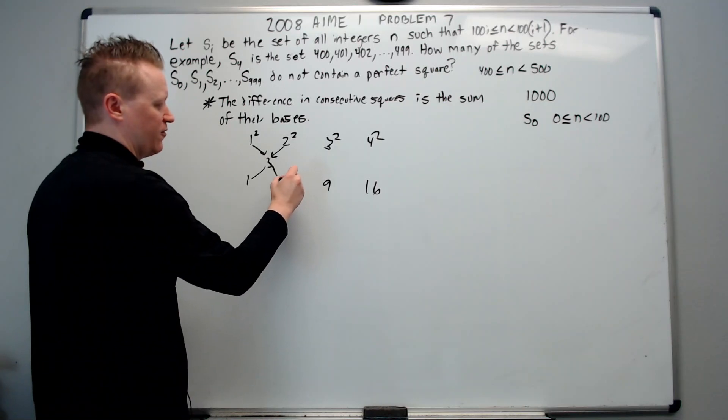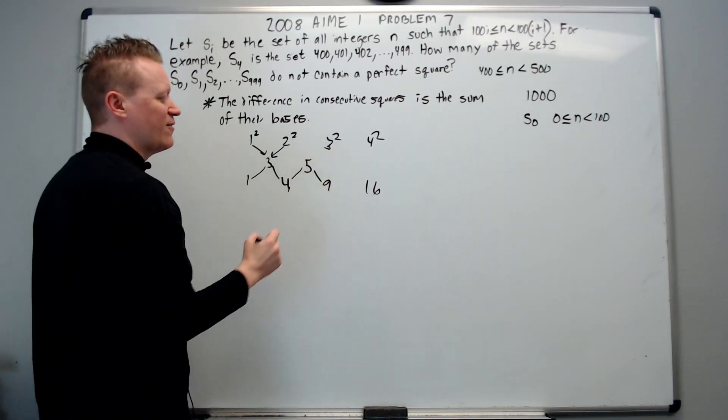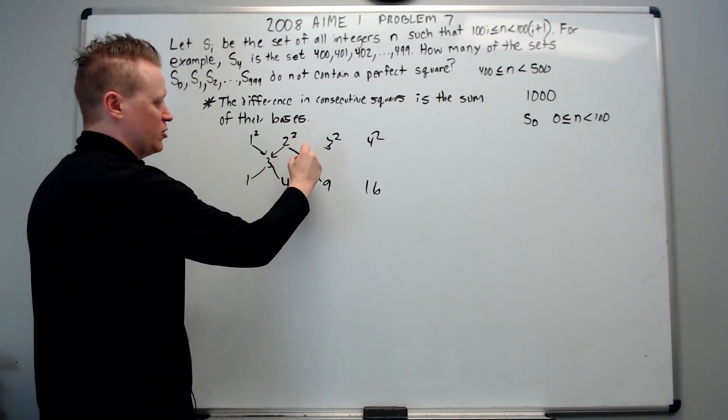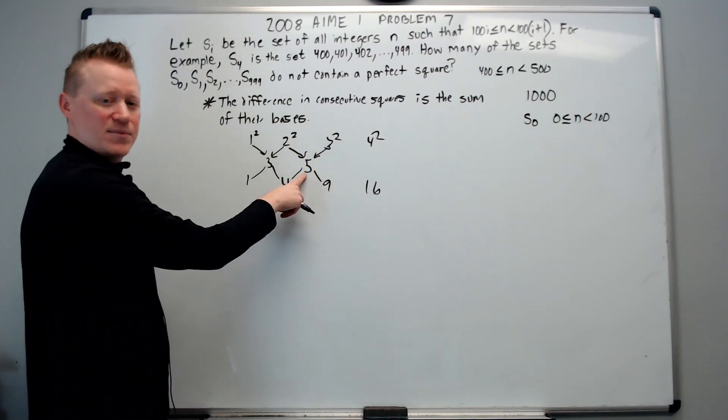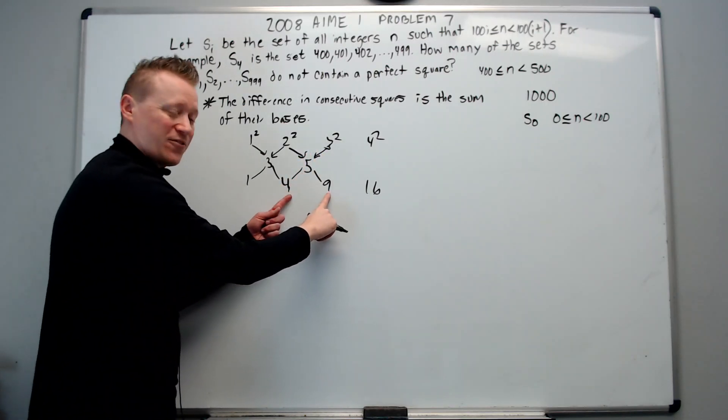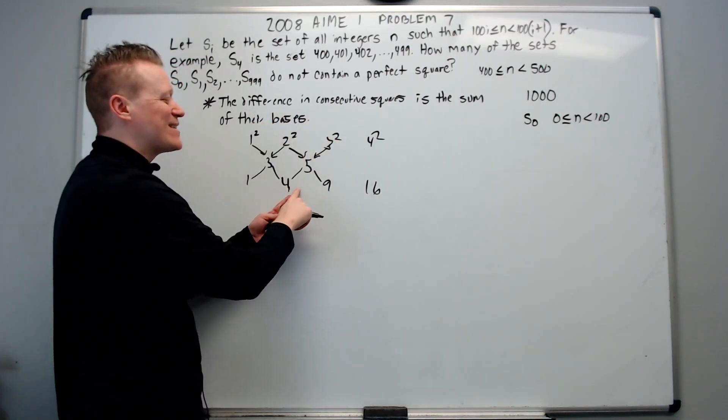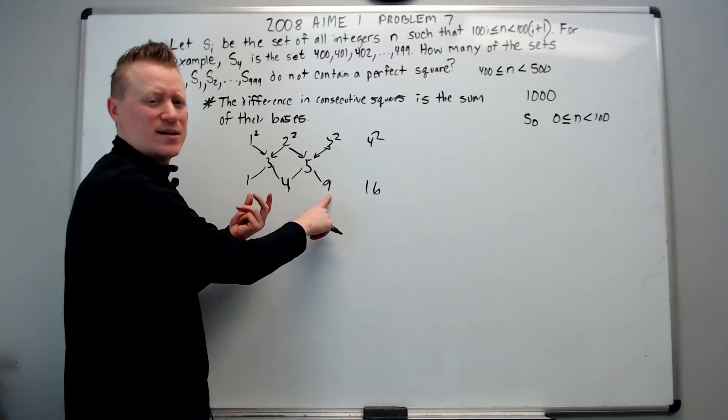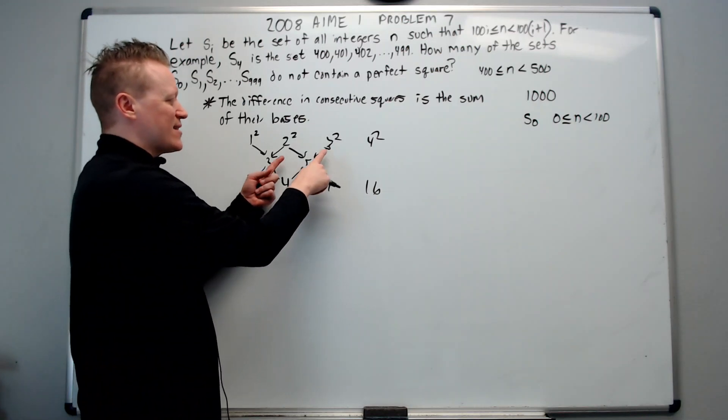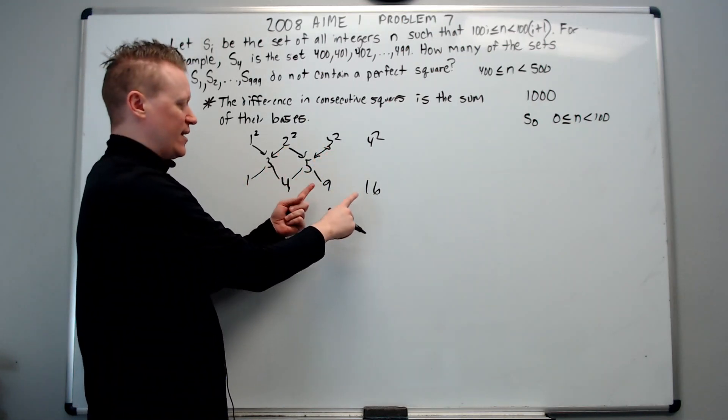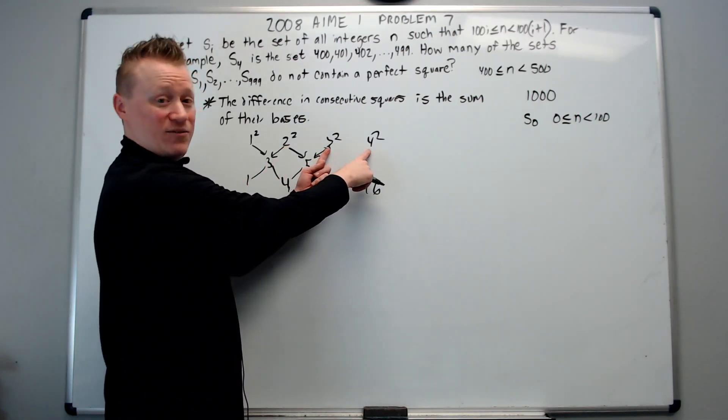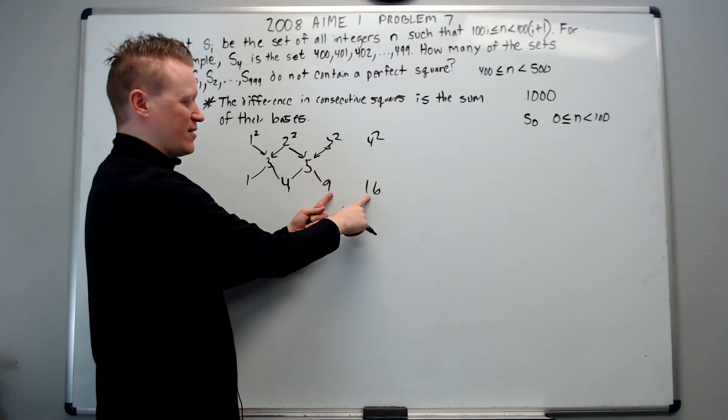How far apart are 4 and 9? They are 5 apart. And here, 2 plus 3 does add up to 5. So the difference between these two numbers, or in other words, the difference in consecutive squares, perfect squares obviously, is the sum of their bases, 2 and 3. 9 and 16, 3 and 4. 3 plus 4 is 7. These are 7 apart.